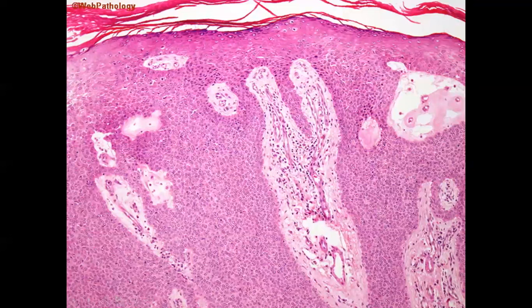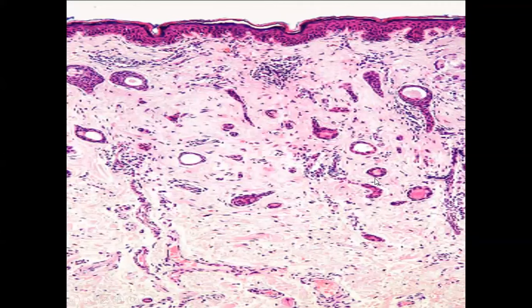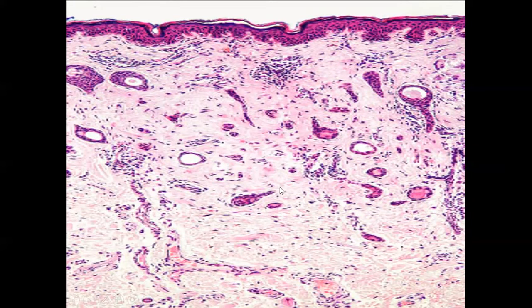Cells resembling squamous cells but smaller and cuboidal are called mini squames — these are poroma cells derived from the acrine sweat gland, present from the epidermis going down into the dermis. Another very typical appearance is ducts with thin epithelial lining, many forming a tadpole appearance — this is a feature of syringoma.